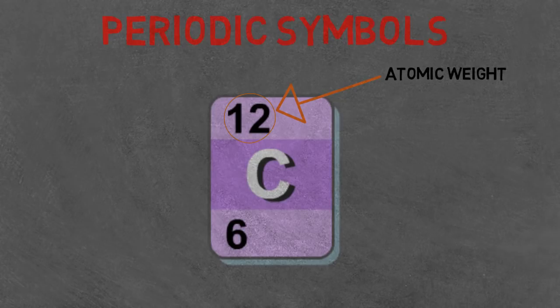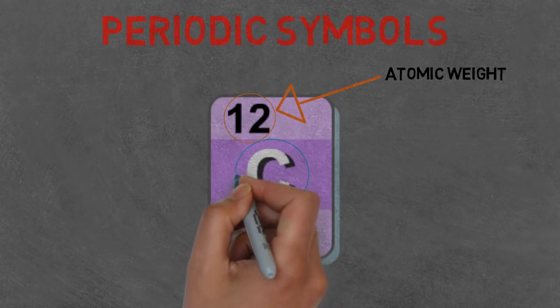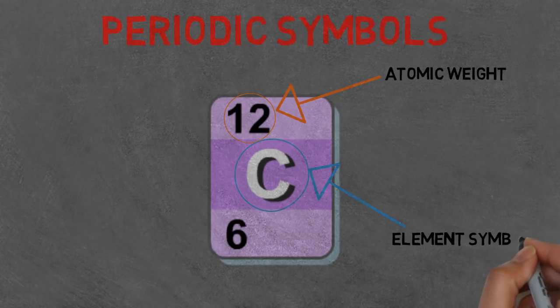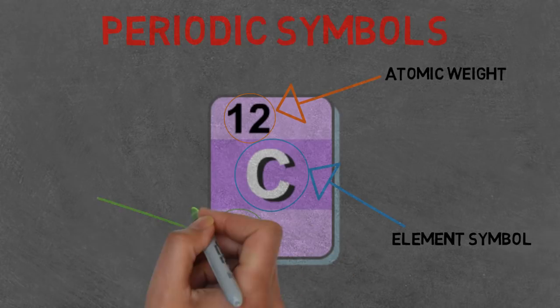The symbol is how the element is represented in the chemical formula. If you remember we talked about water and how it's represented with two hydrogen atoms and one oxygen atom, so its chemical formula is H2O. The H represents the hydrogen element and the O represents the oxygen element.